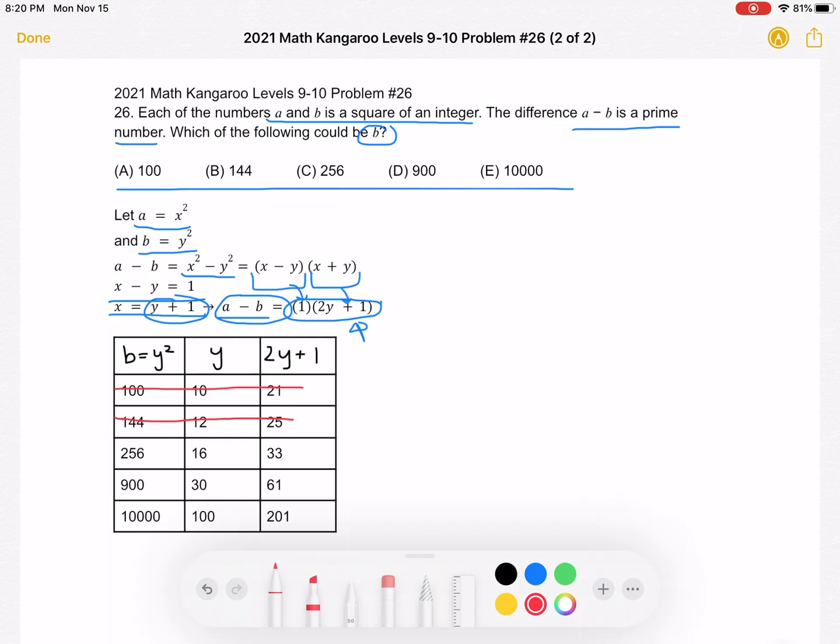If B is equal to 256, then y is equal to 16. 2y plus 1 is equal to 33, which is not a prime number.